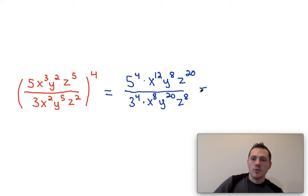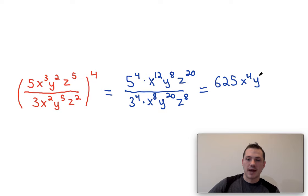Now, when solving these problems, 5 to the fourth gives us 625. x to the twelfth over x to the eighth, we can subtract, and end up with x to the fourth. y to the eighth over y to the twentieth, we subtract, and we get y to the negative twelfth. z to the twentieth over z to the eighth is going to give us z to the twelfth, and 3 to the fourth is going to give us 81.